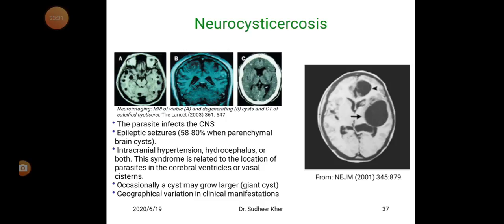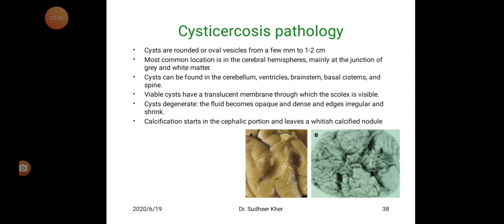Neurocysticercosis occurs when the parasite infects the central nervous system, causing epileptic seizures in 58 to 80% of cases with parenchymal brain cysts, intracranial hypertension, and hydrocephalus. This syndrome is related to the location of parasites in the cerebral ventricles or vascular system. Occasionally a cyst may grow larger — a giant cyst. Cysts are rounded or oval vesicles from a few mm to 1 to 2 cm. Most common location is in the cerebral hemisphere, mainly at the junction of grey and white matter. Cysts can also be found in the cerebellum, ventricles, brain stem, basal system, and spine.